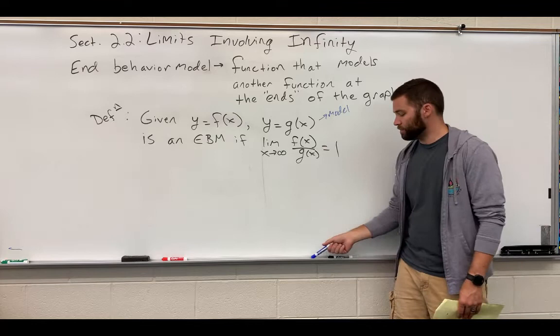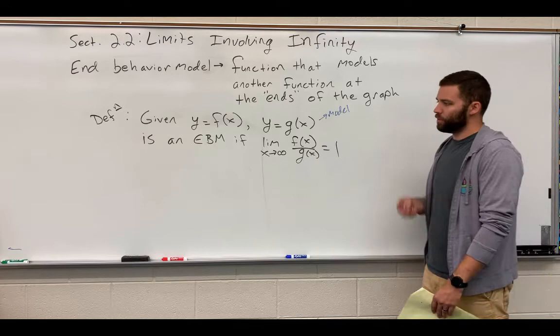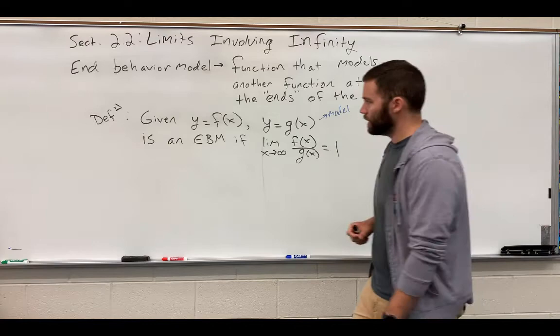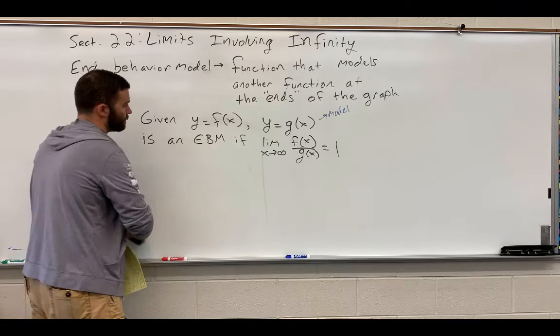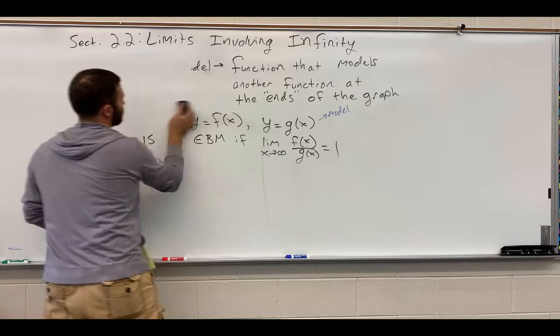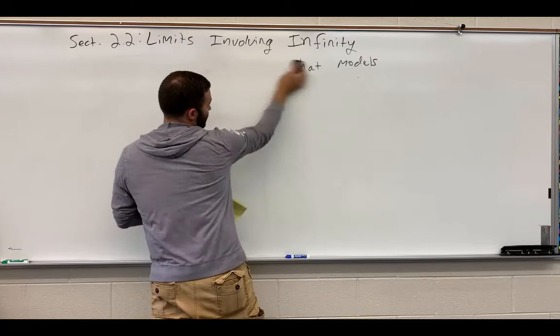So, if the ratio of the functions ends up being, and it has to be positive one, then we know that we have an end behavior model. And you might think for a second, pause the video and think about why that might be true, but I'll leave that for a discussion in class. But it's a good thought experiment as to why that ratio needs to result in being one to be an end behavior model.